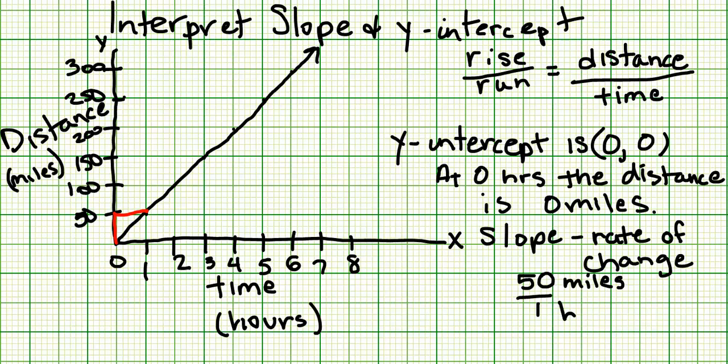That sounds like a speed - 50 miles per hour. So to interpret the slope of this line, we would say it's 50 miles per hour. That's the rate of change, whether it's a vehicle or a train. If this graph is linear, which means it's a straight line, that rate of change should stay the same.